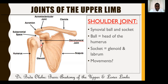The shoulder joint is multi-axial, just like the hip joint, meaning it allows movement in multiple axes. You can flex, abduct, and rotate the shoulder joint in any position. The axis of flexion and extension, the axis of adduction and abduction, and the axis of rotation are all available.